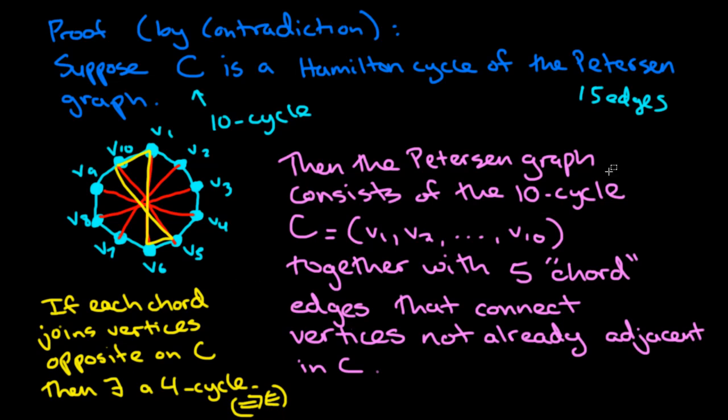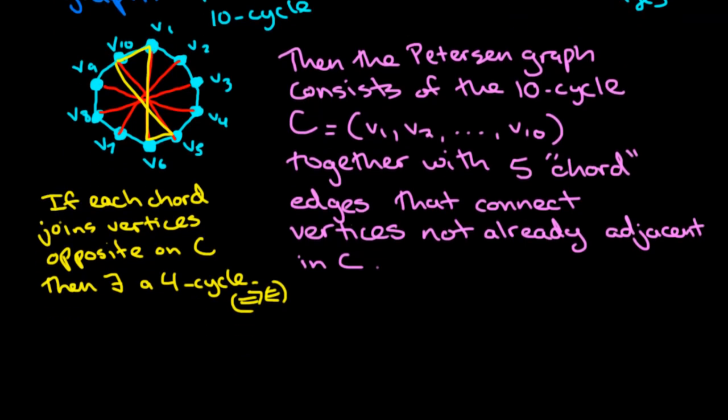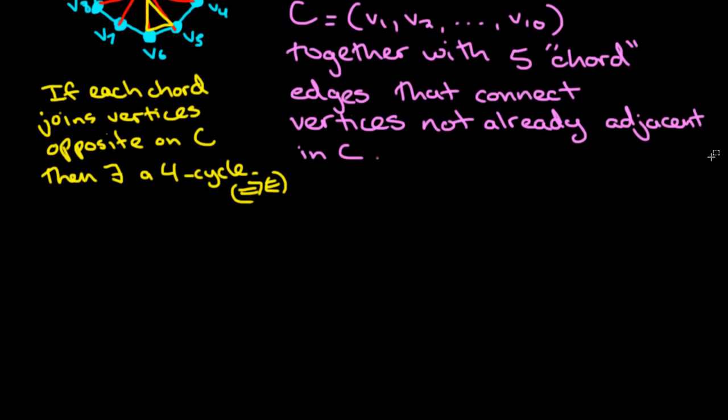So let's take a look at what chords could be possible. So here we have the ten cycle again. And if we just think about the vertex V1, and we consider what chord is going to be incident with it, because we know that every vertex in the Petersen graph has degree three. So right now, V1 only has degree two. There's definitely a chord incident with this vertex.